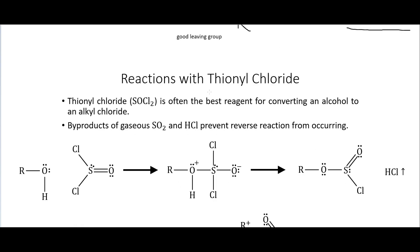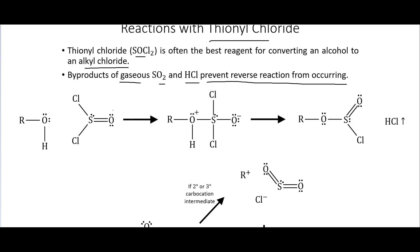Another way to halogenate is with thionyl chloride, SOCl2, which is often the best reagent for converting an alcohol to an alkyl chloride. Recall that with the Lucas reagent we get poor yields and many side reactions. The byproducts of thionyl chloride are gaseous SO2 and HCl — because these leave as gases, Le Chatelier's principle prevents the reverse reaction and drives the equilibrium toward products.